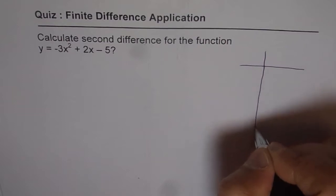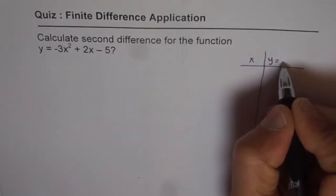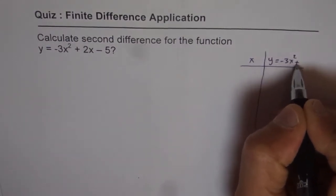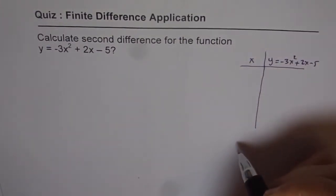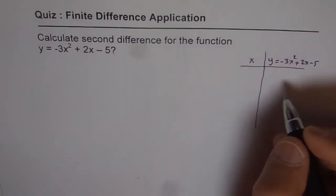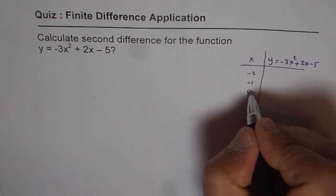They will make a table of values. In the table of values you can write the x values and the y values which will be minus 3x squared plus 2x minus 5, and then you can plug in some x values. And the key values which you have been taught to plug is minus 2, minus 1, 0, 1 and 2.